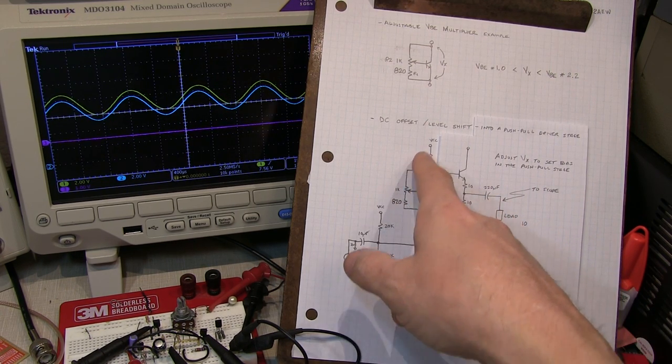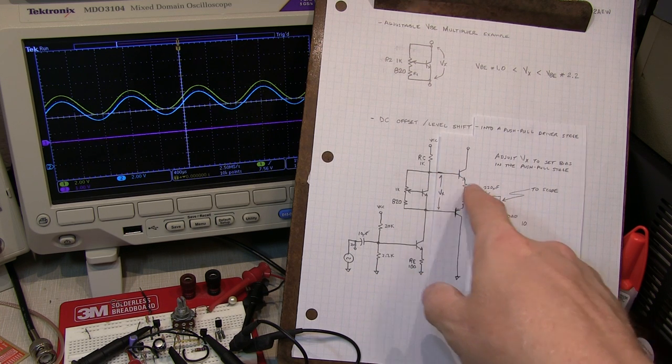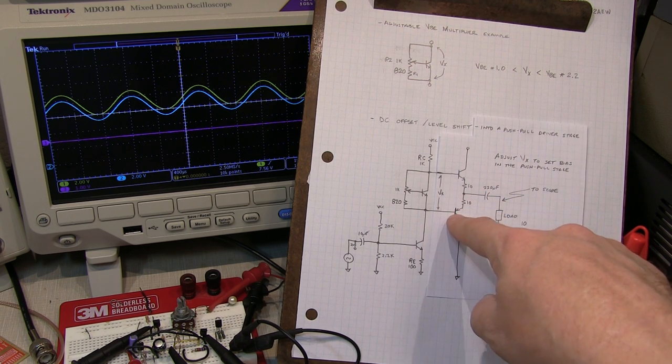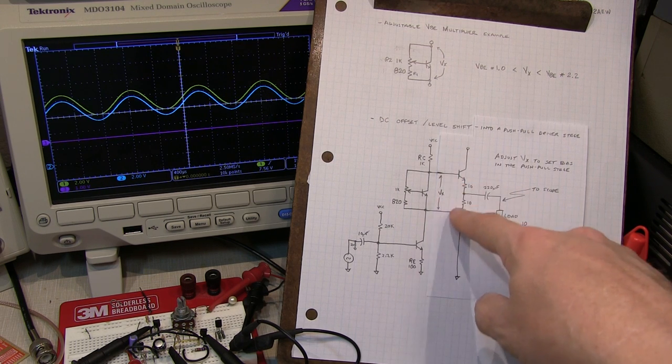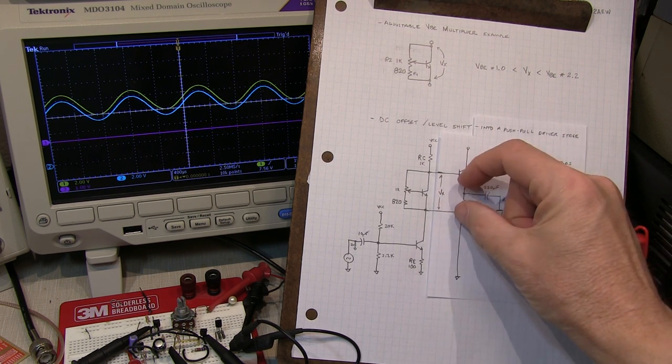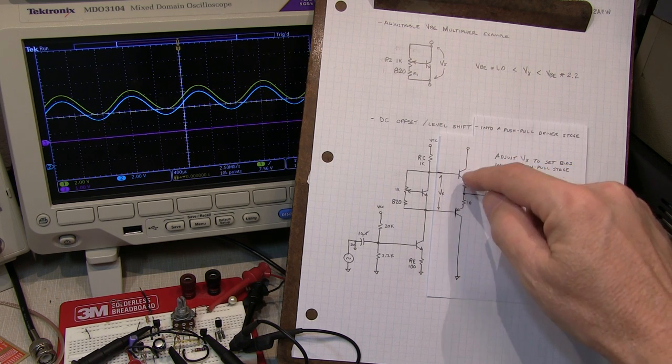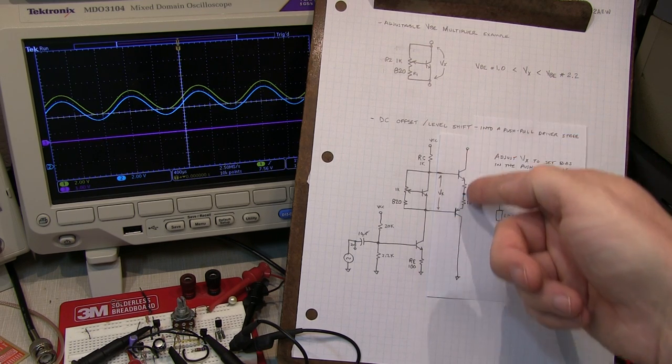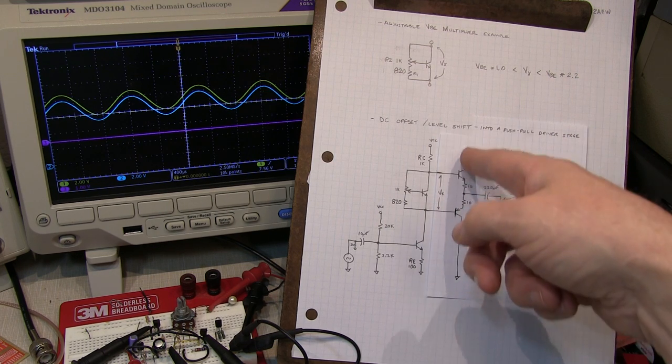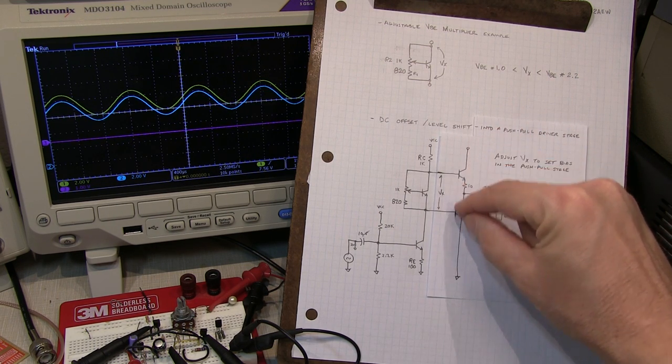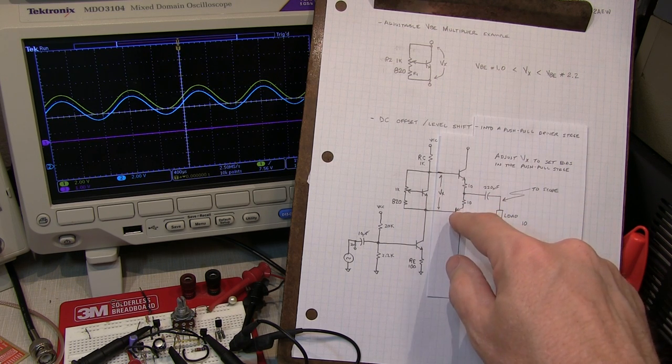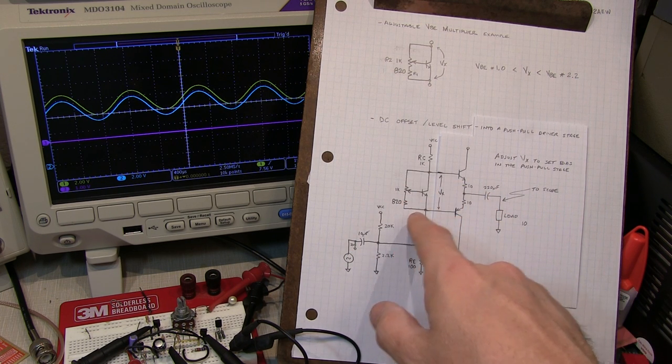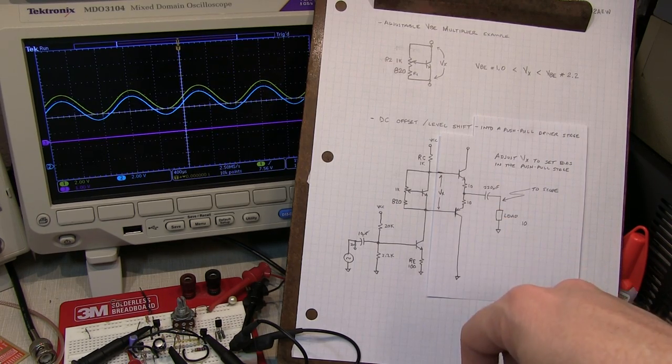But, so for positive going swings, we want to basically power that load through this emitter follower. And for negative going swings, we'll yank the current out of that load through this PNP emitter follower. Now, in order to set this push-pull output stage up properly, we need to adjust the voltage drop between them so that these transistors are both just starting to turn on. You don't want them to turn on too far because we'll create a nice low impedance path across the supply and draw a lot of current. And we don't want to have these two transistors completely cut off because we'll create what's called crossover distortion, where both these transistors are off for a while and the voltage has to raise up a little bit one way or the other in order for one transistor to turn on or the other one to turn on.